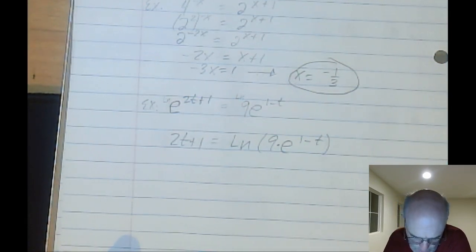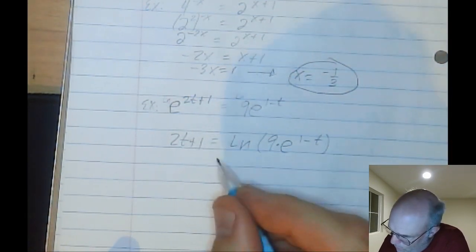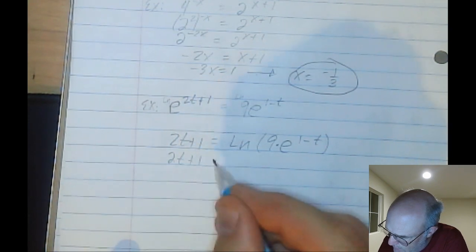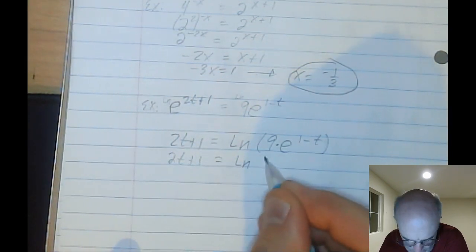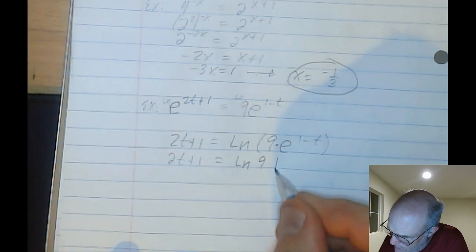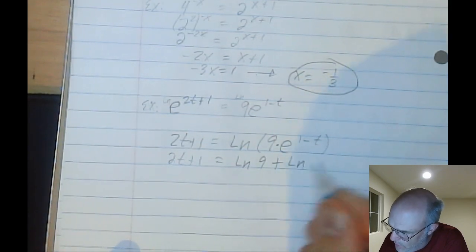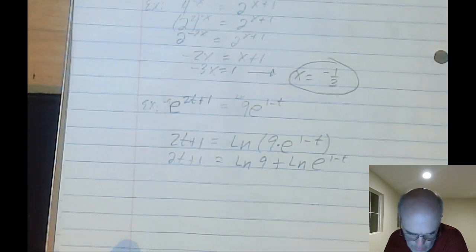And that's just going to be, you could use, because this is a product here, you can do the rule that was on that worksheet. 2t plus 1. Natural log of 9 plus the natural log of E to the 1 minus t. 1 minus t is, of course, 1 minus t.